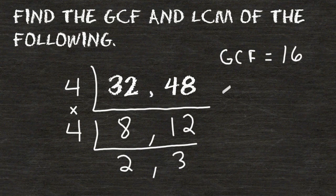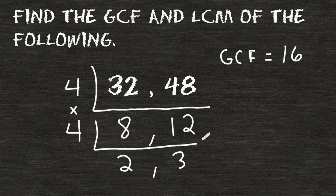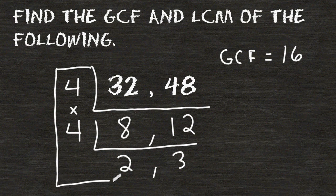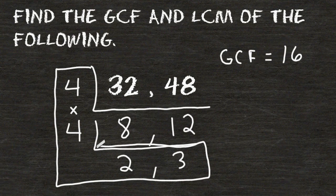Now, what's nice about using this strategy is we actually have all the numbers that we need to calculate the least common multiple of 32 and 48. What you do is you take all of the numbers on the left-hand side that we used, and the numbers that you have all the way at the bottom, and you are going to multiply all of those numbers together. And if you notice, it kind of forms a large L, which stands for least in least common multiple.